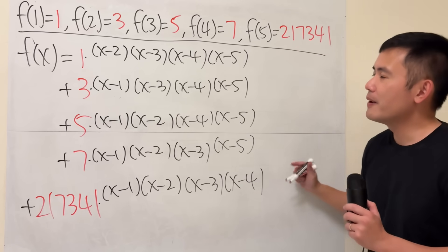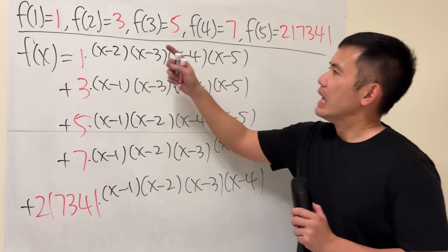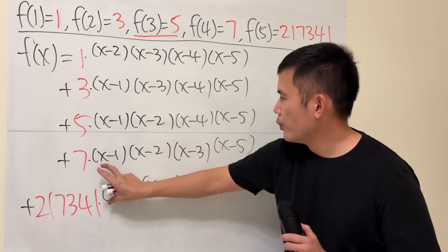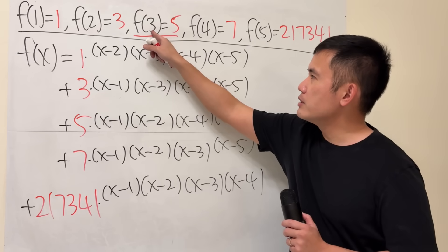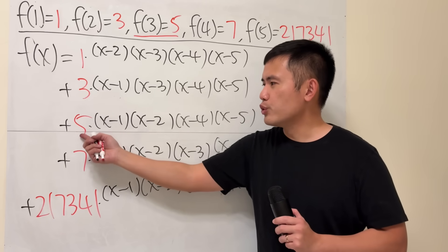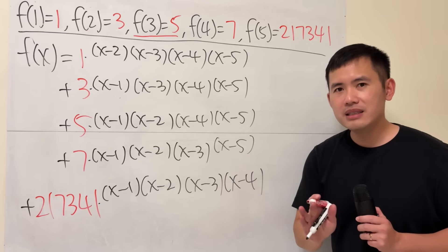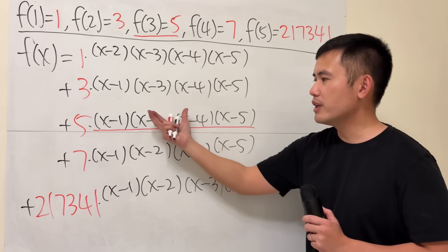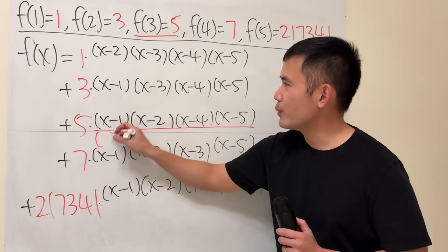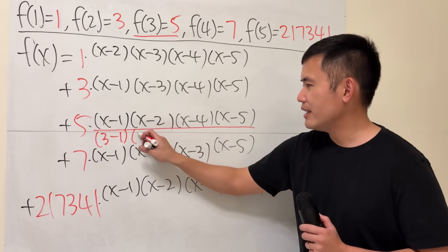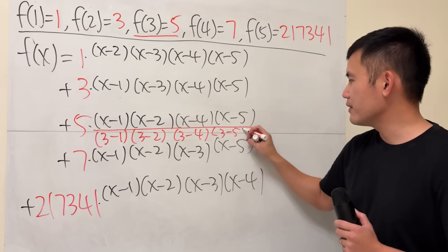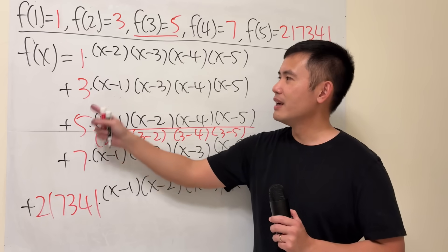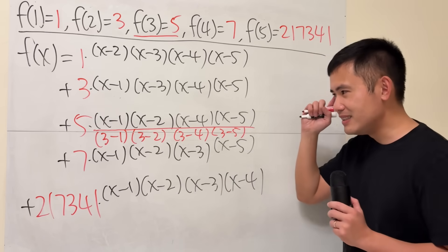So far, so good. But will this really work? Let's think about it. For example, if f(3) = 5, when I plug in 3, the other rows will be zero — but the third term will contribute some value that could ruin the 5. The fix: if we divide by the same value we get when plugging x = 3 into those factors, it cancels out. So we divide by (3 − 1)(3 − 2)(3 − 4)(3 − 5). They cancel nicely, and you end up with the 5. The other terms are 0. That is the idea from Lagrange.